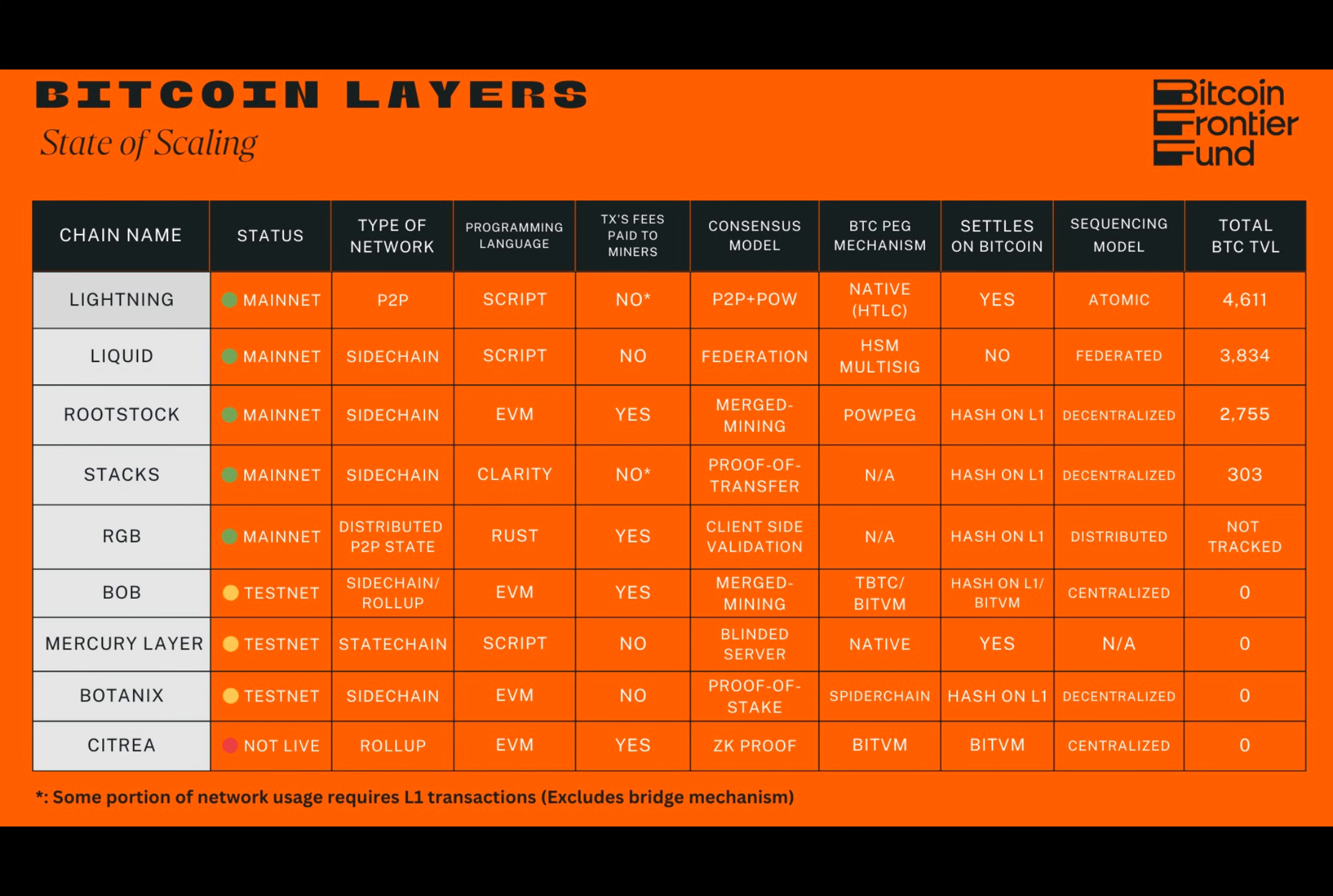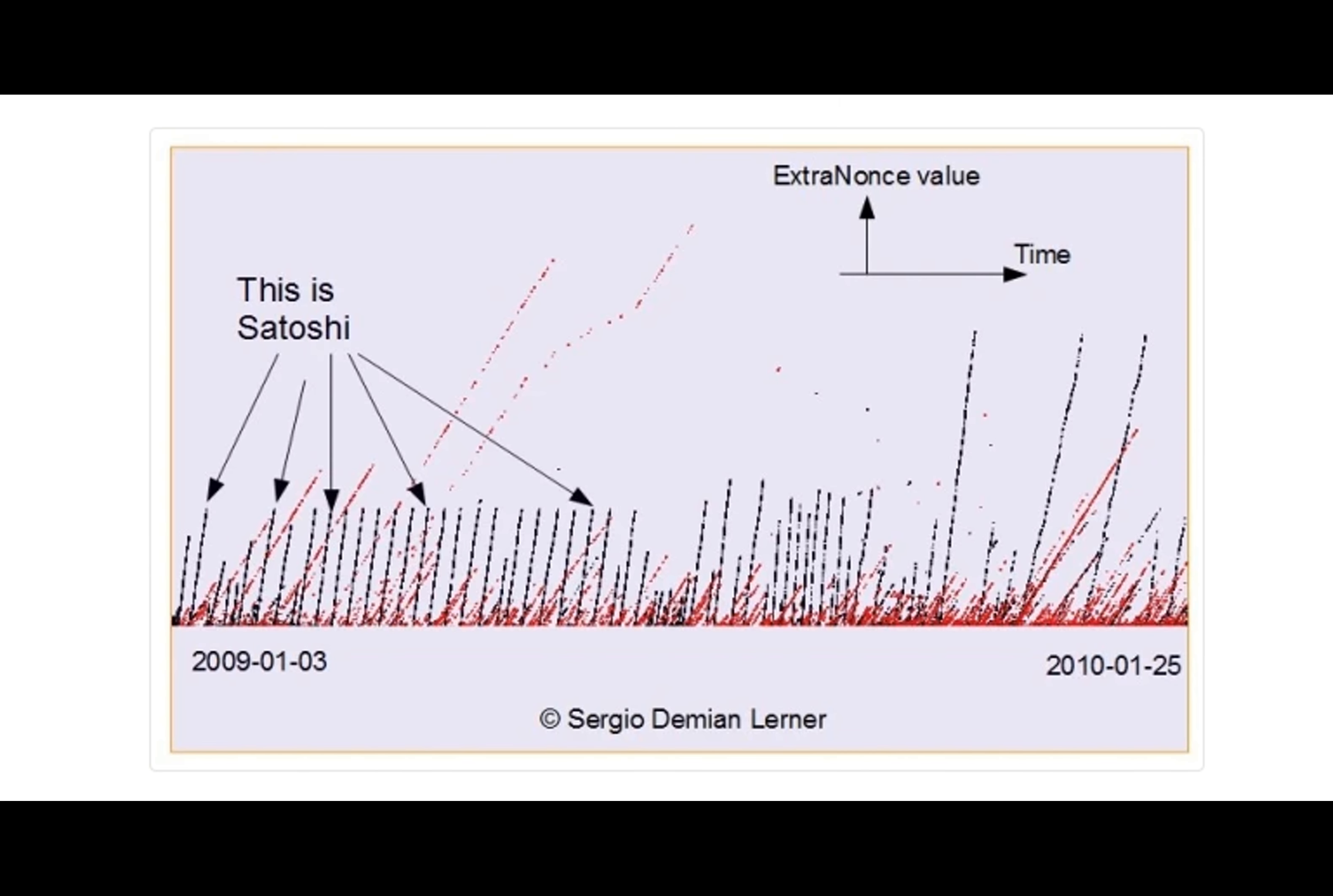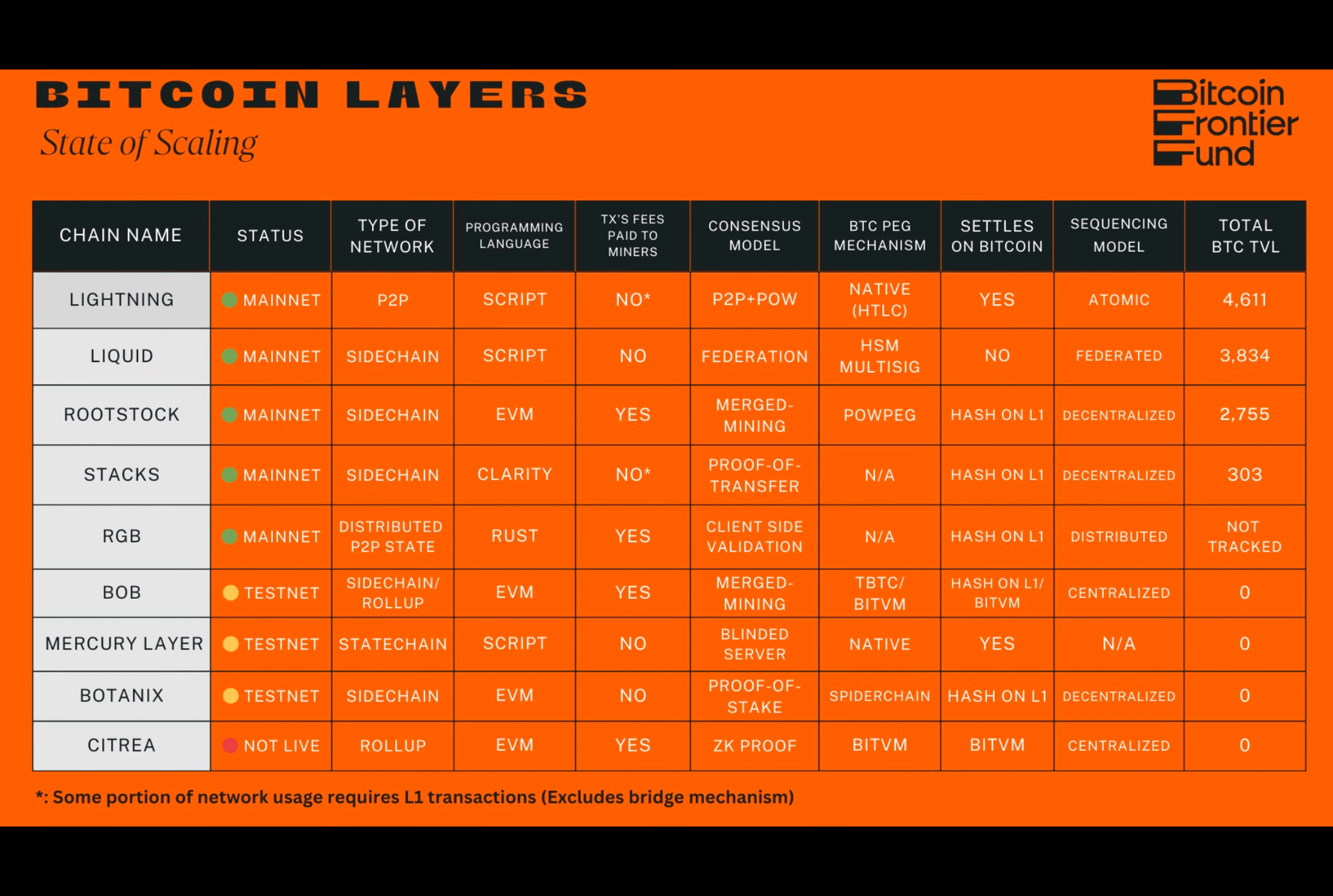He adds that users should stick to battle-tested solutions like the Lightning Network, Liquid and Rootstock, rather than risking their sats on untested or unknown solutions with deep pockets and shiny marketing campaigns.